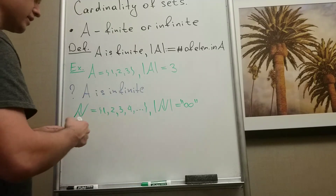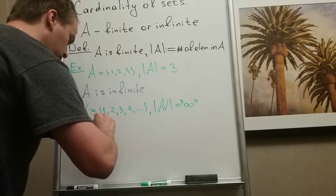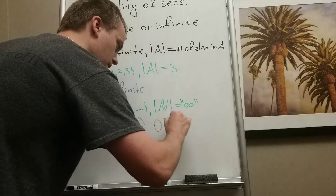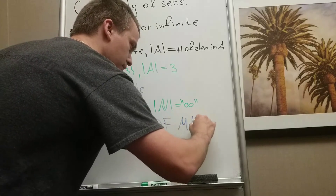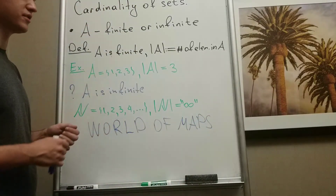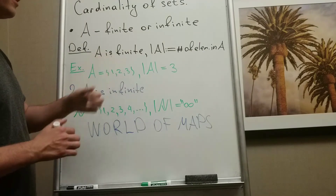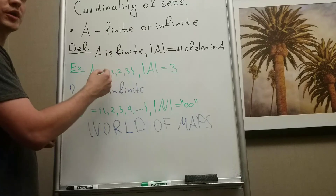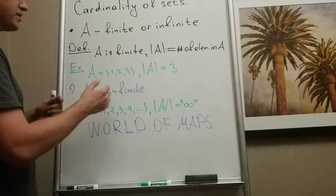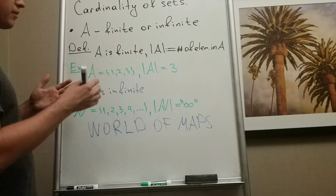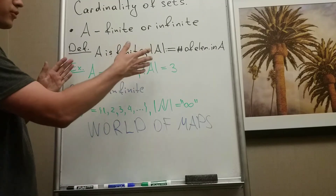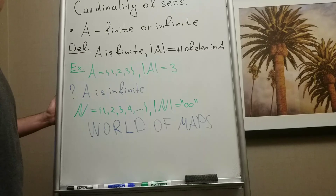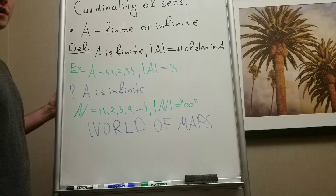I call the infinite case the 'world of maps' — we define cardinality by using functions, mappings, and projections. When A is finite, I call this the 'world of counting', because we're counting elements — essentially simple combinatorics, which is the science of counting. So thank you for watching, and let me know if you have any questions.